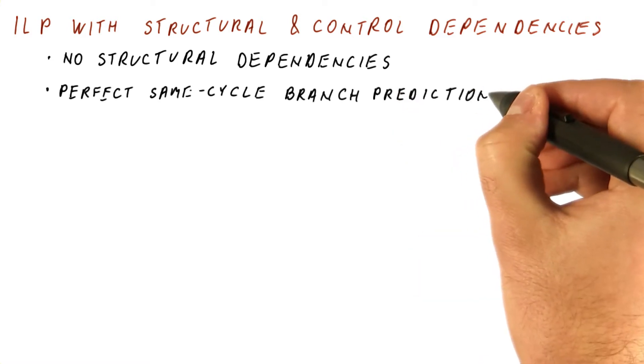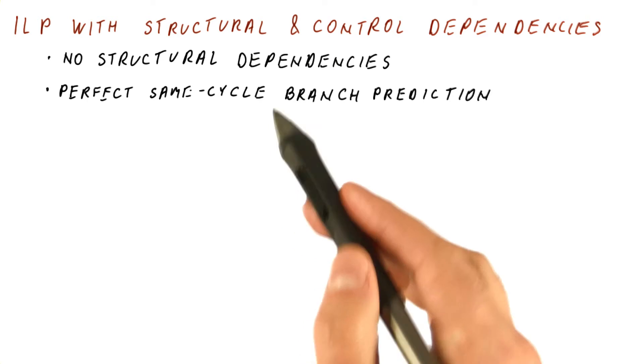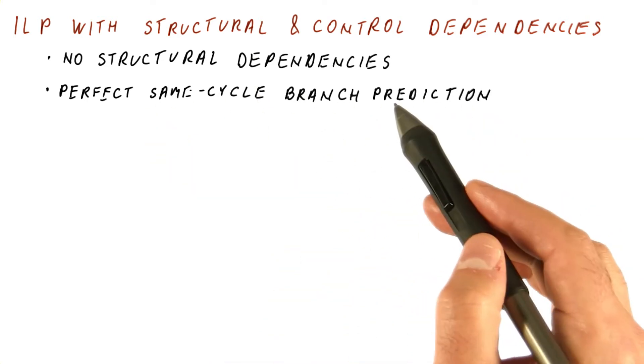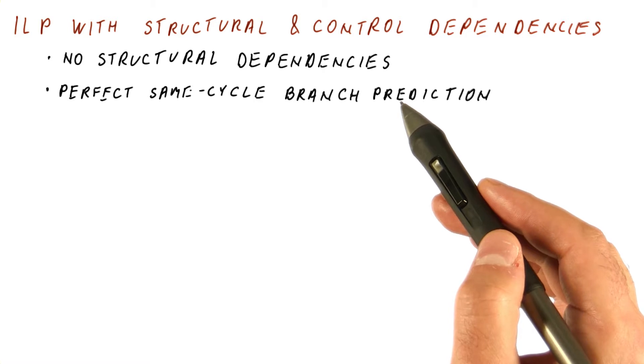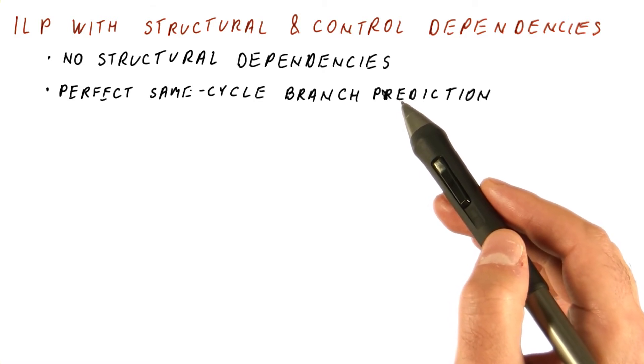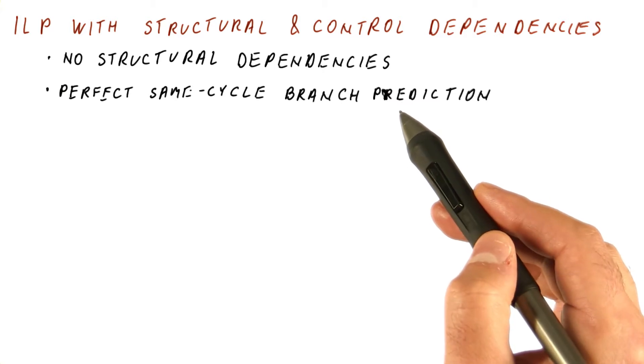For control dependencies, we assume that we have perfect same-cycle branch prediction, meaning that branches are predicted in the same cycle in which we fetch them. So we see all the correct instructions after the branch in the same cycle in which we see a branch.